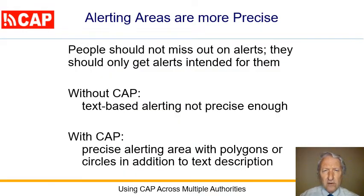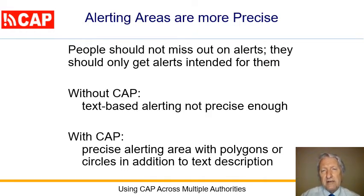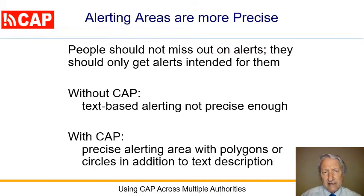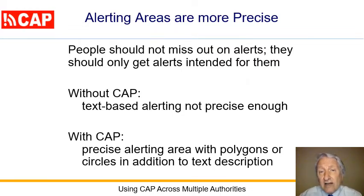Trust in an alerting system is eroded when people miss out on alerts. Trust is also eroded when people get alerts not intended for them. These happen often with systems based on text. With CAP, the alerting areas can be precisely defined with polygons or circles in addition to the area description text.